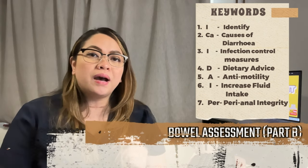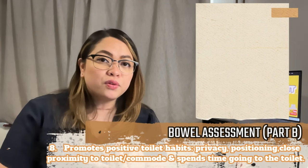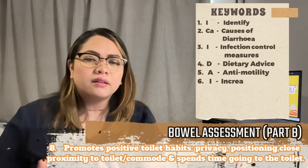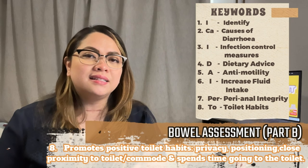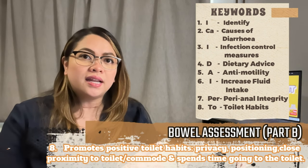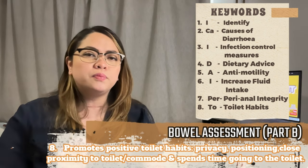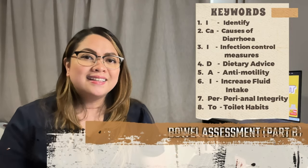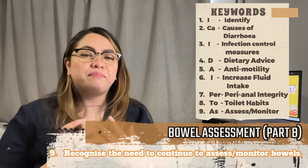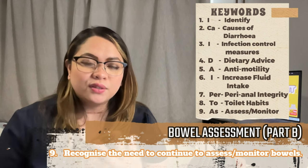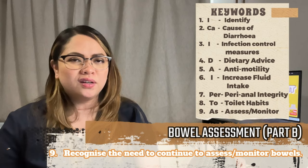Same as Part A, Part B also requires you to promote positive toilet habits: privacy, positioning, and close proximity to the toilet or commode — because some patients can't run to the toilet in time. Make sure a bedpan or commode is readily available, and consider the time spent going to the toilet. The keyword here is 'T' for toilet or positive toilet habits. The last criteria: you have to reassess and monitor the patient's bowels regularly, recognizing the need to continue assessing bowels. The keyword is 'ass' for assess or monitor.